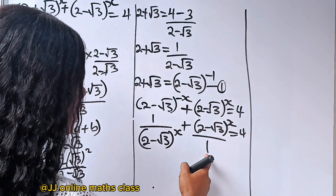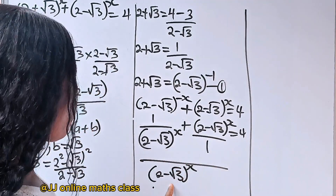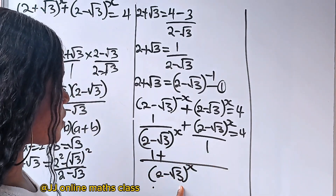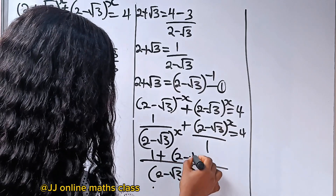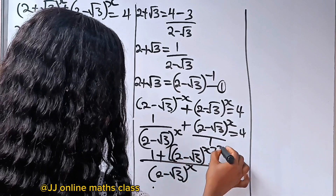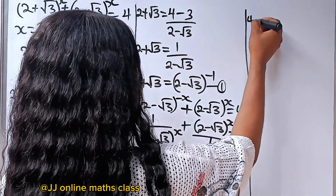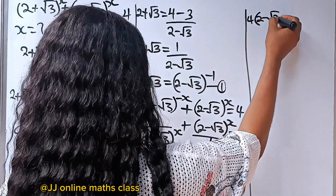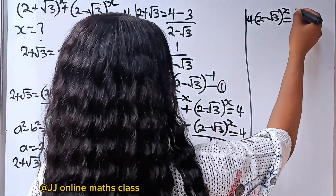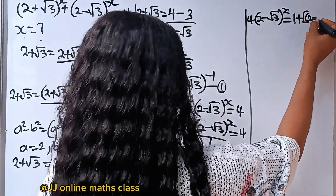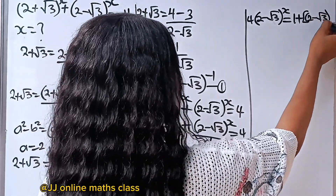Now let's solve this. The LCM of these two terms is 2 minus root 3 to the power of x. When this divides, you have 1 times 1 which gives 1. Plus, when 1 divides this, you still have 2 minus root 3 to the power of x. So when you multiply it by 2 minus root 3 to the power of x, it becomes 2 minus root 3 to the power of x, all squared, equal to 4. Let's cross multiply — we have 4 times 2 minus root 3 to the power of x.